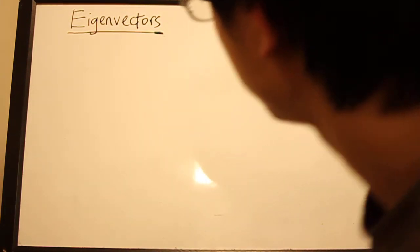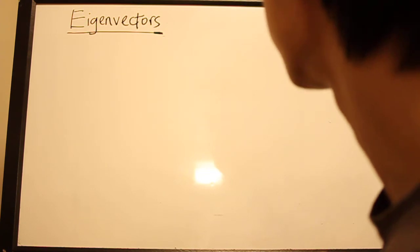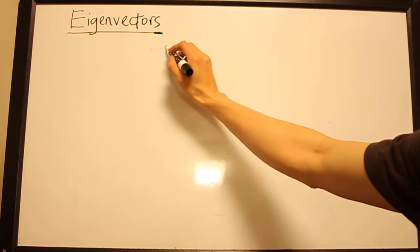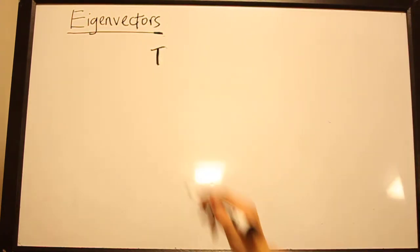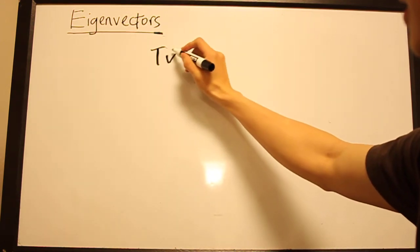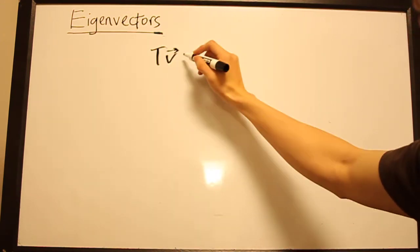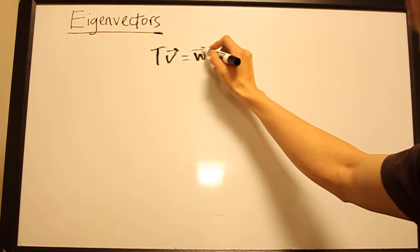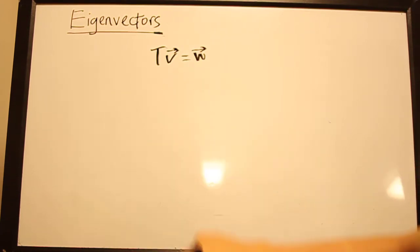Okay, so today we are going to be talking about eigenvectors. Recall that if I have a linear transformation T, or matrix T, and I let T act on the vector V, we get a vector W which may differ in magnitude and direction from V.